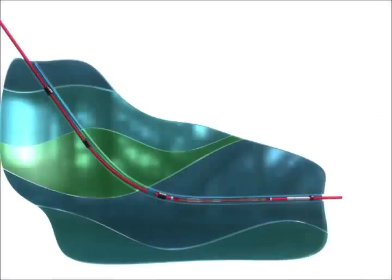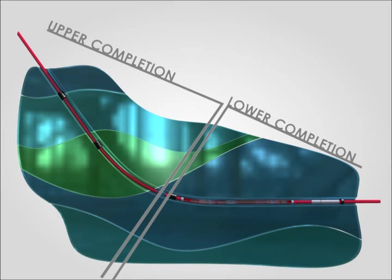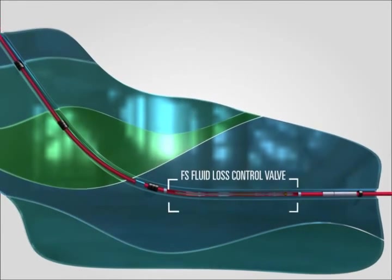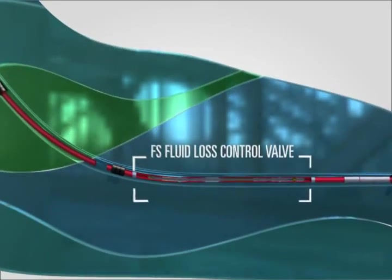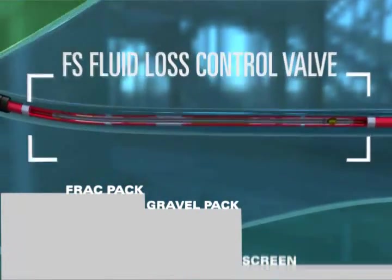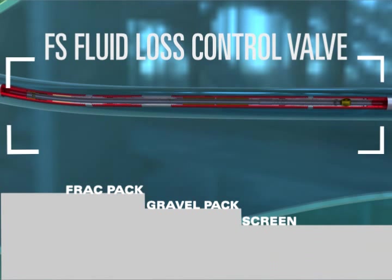The FS Fluid Loss Control Valve provides a means of isolating the formation below the uppermost gravel pack or screen packer before the upper completion has been installed and can be utilized in frac pack, gravel pack and stand-alone screen applications.